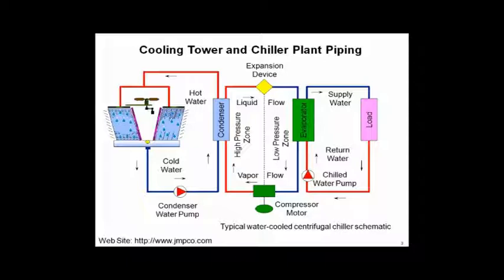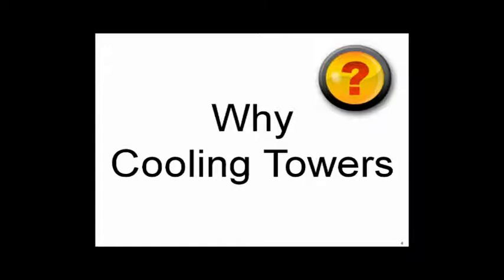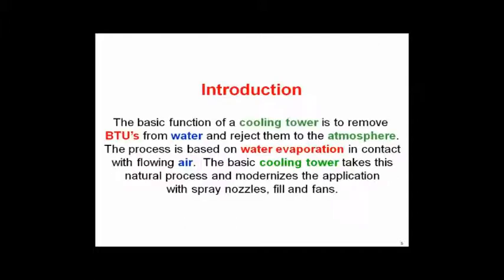We've got to look at the energy side, and you need to understand the basic refrigeration story so you can understand what follows. Why have a cooling tower to begin with? It goes back to refrigerant temperature and water — very simple. A cooling tower takes latent heat. If you take a pound of water and make it into steam, it takes 1,000 BTUs. Conversely, condensing a pound of steam to condensate releases 1,000 BTUs. We'll use 1,000 today.